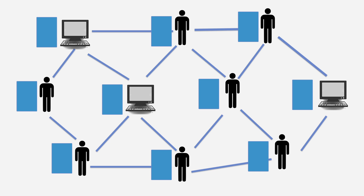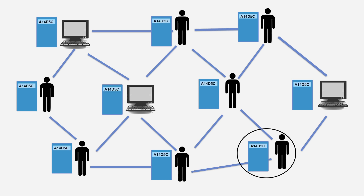Let's look at an example. Suppose this node wants to perform a transaction — he wants to send some Bitcoin to someone. He performs the transaction, and it is added to his mempool. Then it gets broadcast across the network, and all other nodes add that transaction to their mempool.